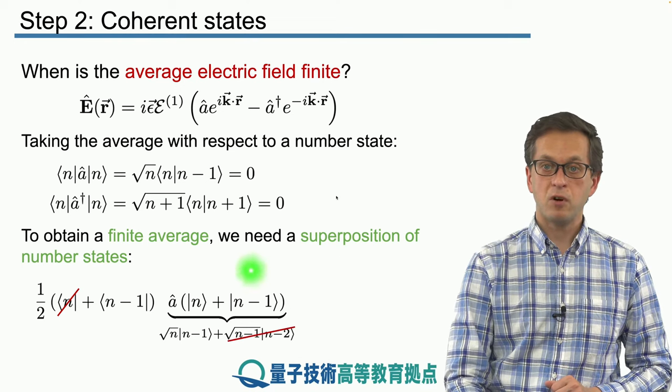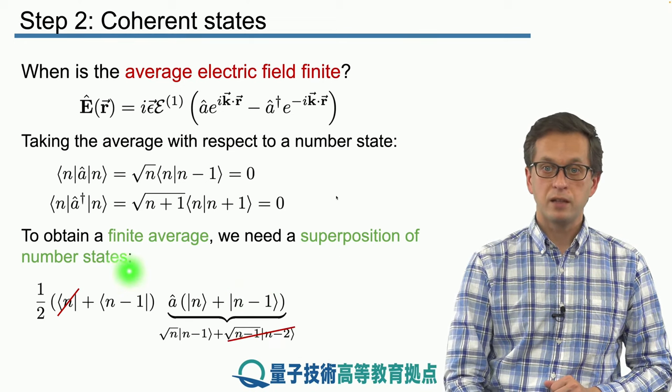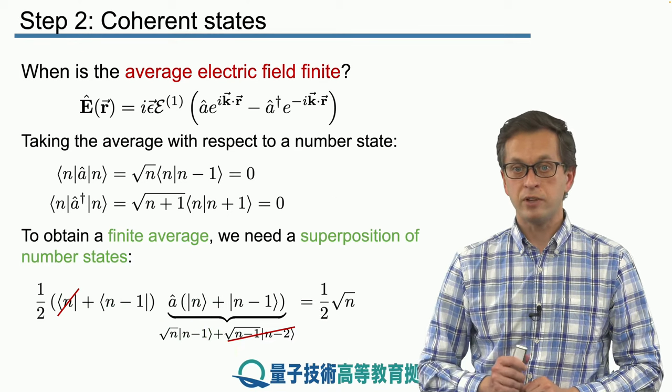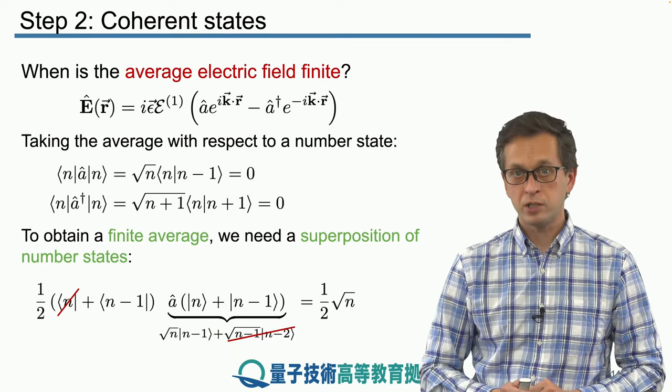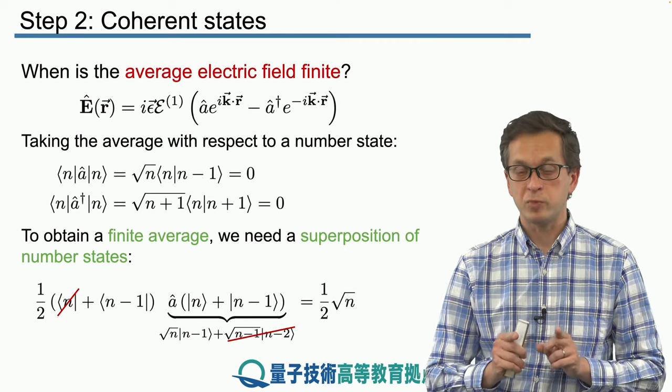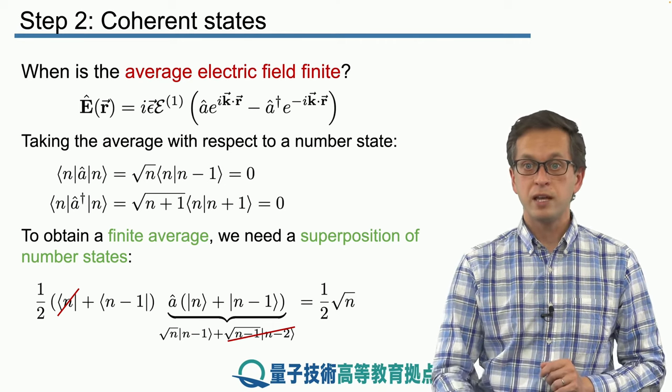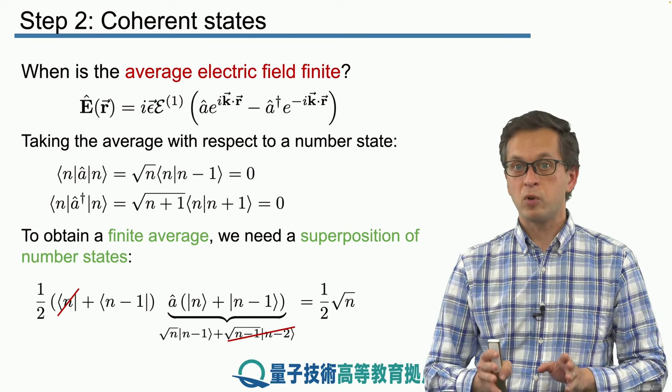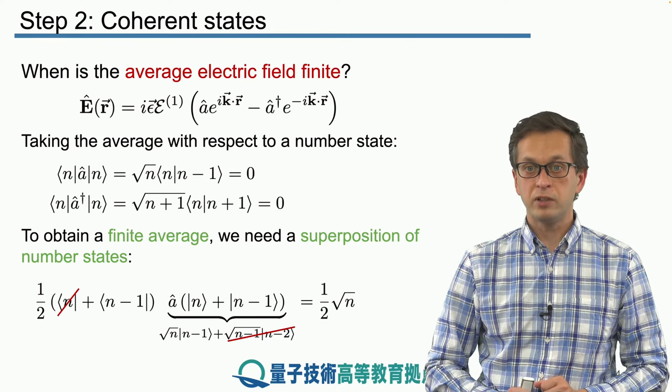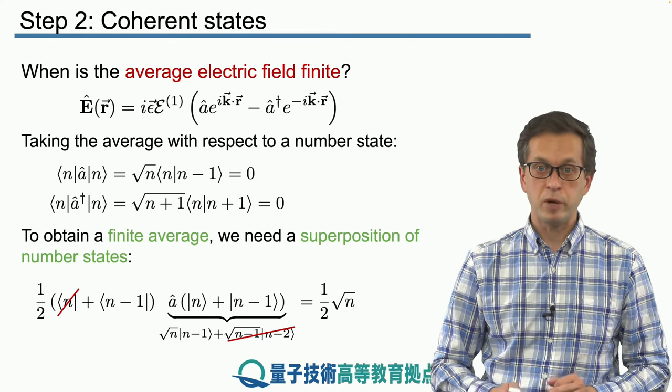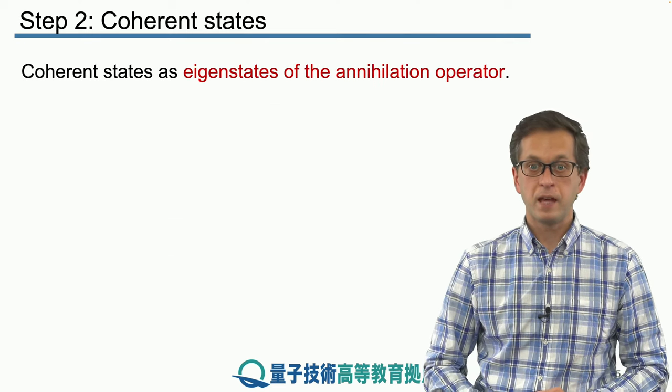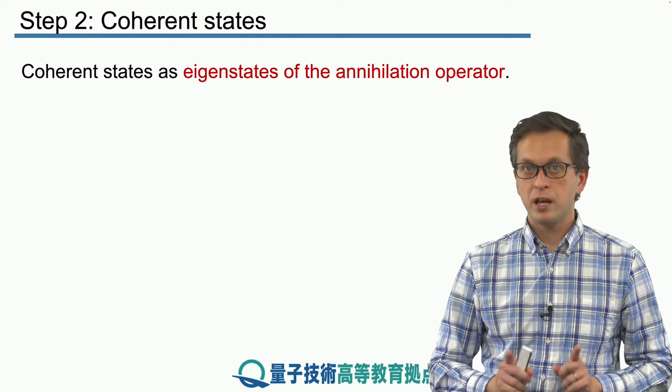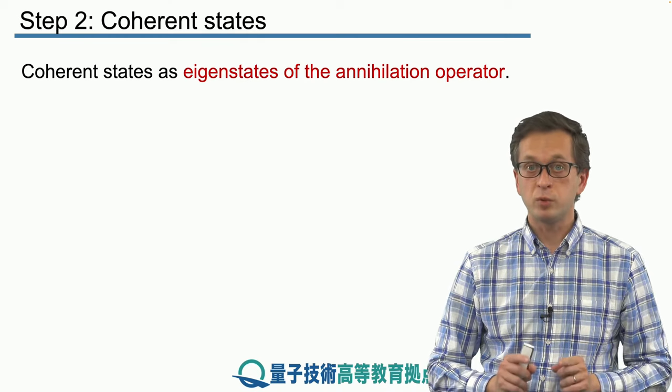But n minus 1 has an overlap with this n minus 1. So the average of the creation operator, when we prepare our quantum light in this superposition of n and n minus 1, is half square root of n. So now we know how to obtain a finite average of the electric field for a quantum state. It must be a superposition of number states. And coherent states are such a superposition. But it's not just any superposition. It's got a very particular shape, which we will derive now.